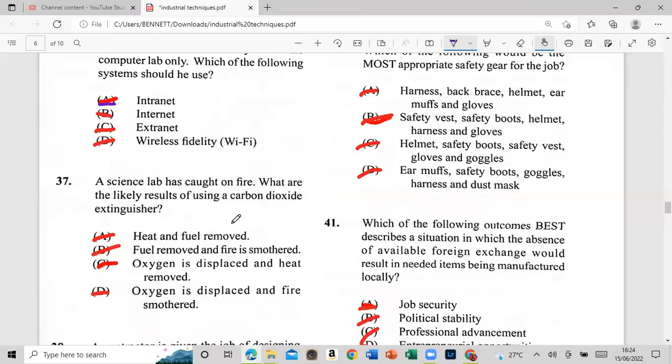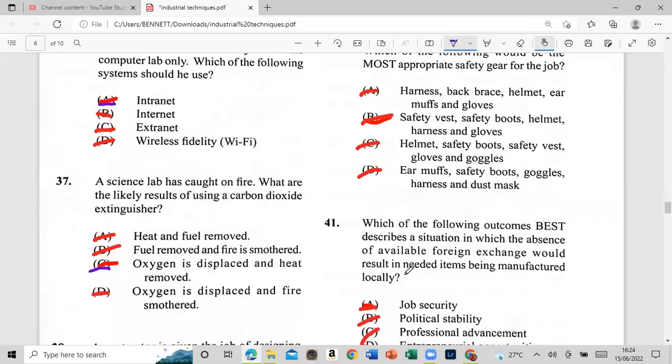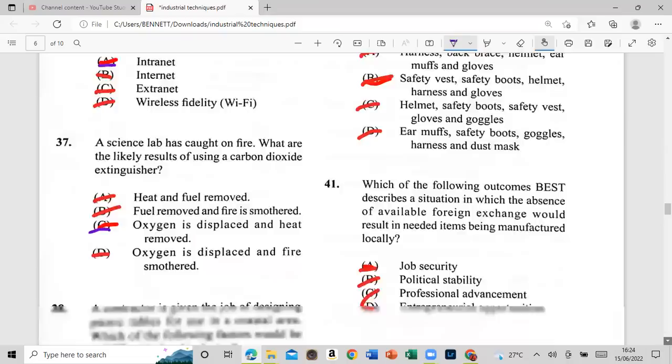A science lab has caught on fire. What are the likely results of using carbon dioxide extinguisher? A: heat and fuel will remove. B: fuel remove and fire is smothered. C: oxygen is displaced and heat removed. D: oxygen is displaced and fire smothered. Which is it, guys? If you had said C: oxygen is displaced and heat removed, so that is C.